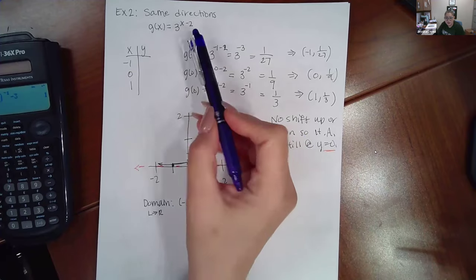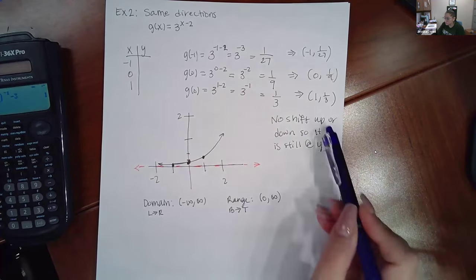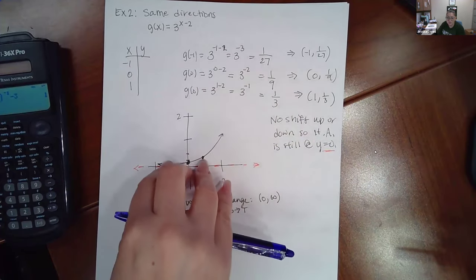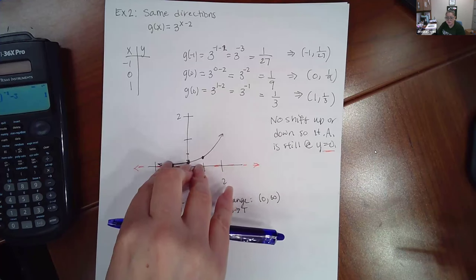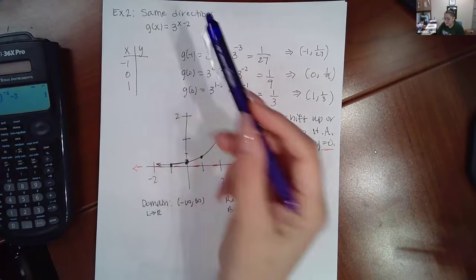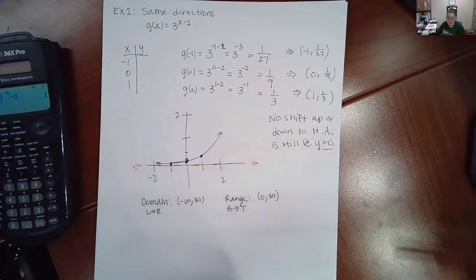This time you actually don't have something that's being added or subtracted, so there's no up or down shift. If I was adding a number, that means this horizontal asymptote would be going up however many units that number is. If it were minus a number like in the previous example, then the horizontal asymptote is moving down that many units.